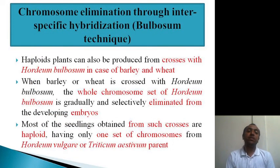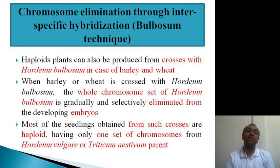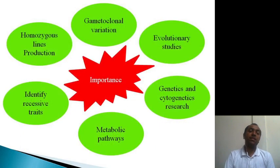The last method is chromosome elimination through inter-specific hybridization, or the bulbosum technique. When wheat or barley is crossed with Hordeum bulbosum, the whole set of chromosomes from Hordeum bulbosum is gradually and selectively eliminated from the developing embryo. Most seedlings obtained from such crosses are haploid, having only one set of chromosomes from Hordeum vulgare (barley) or Triticum aestivum (wheat).